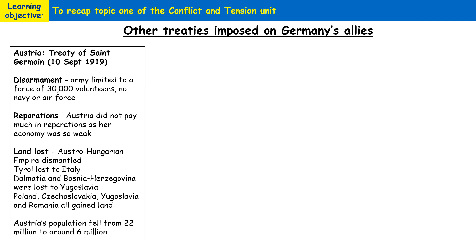Austria lost so much land that its population fell from 22 million to around 6 million. Examples of the territories lost include land given to Italy, Bosnia, Czechoslovakia, Poland, and Romania.